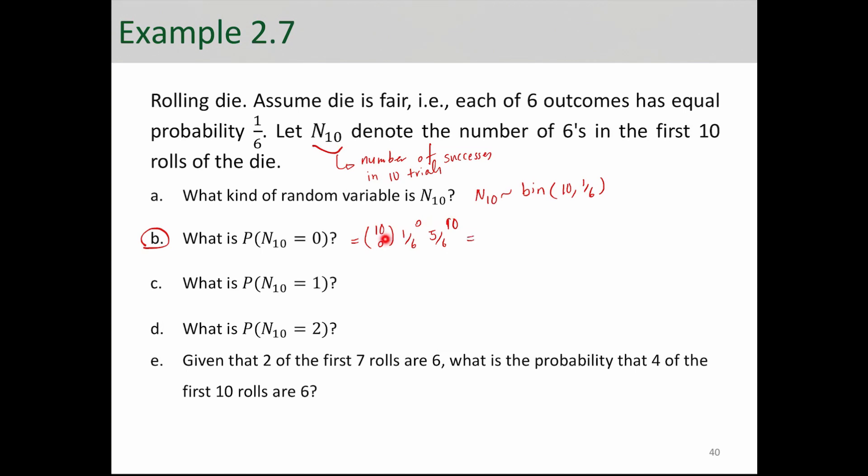And 10 choose 0 is number of ways of choosing 0 items out of 10 items. And that is obviously one way, but you can confirm that calculating it with the formula. 10 factorial over 10 factorial times 0 factorial. And here I have to tell you that 0 factorial is equal to 1. So keep that in mind. It's not 0. 0 factorial is equal to 1. Therefore this whole thing is equal to 1 times 1 times 5/6 to 10. And if you do the math, that is equal to 16%.